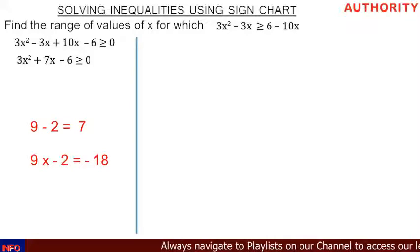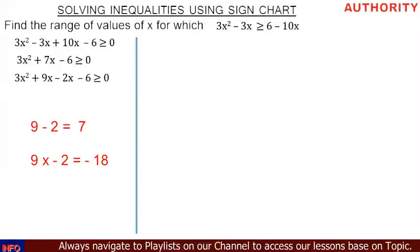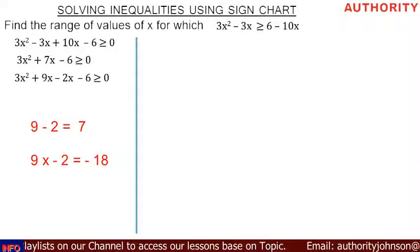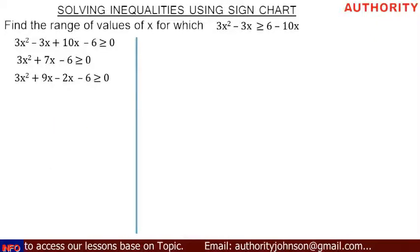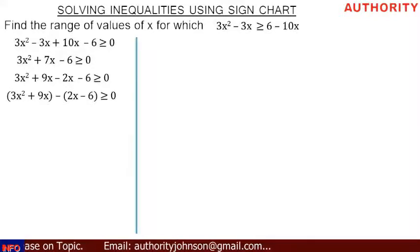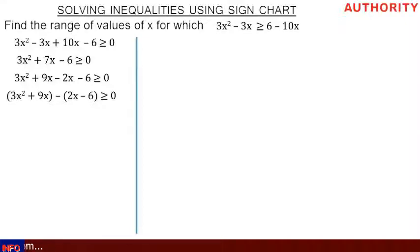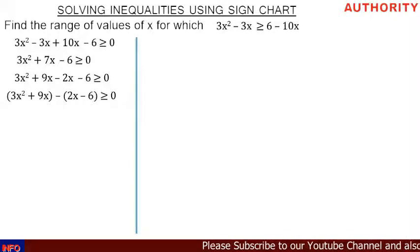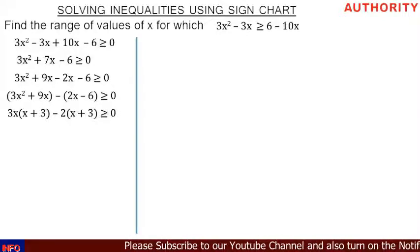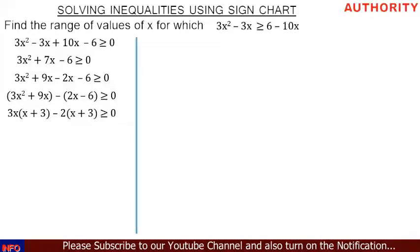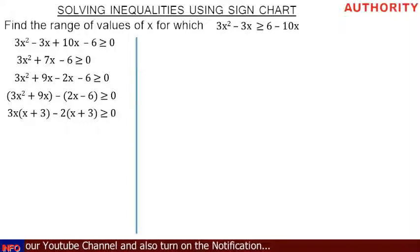We now have 3x squared plus 9x minus 2x minus 6, greater than or equal to 0. Let's group them two by two: (3x squared plus 9x) and (minus 2x minus 6), greater than or equal to 0. In the first bracket, 3x is common — factoring out 3x from 3x squared gives x, and from 9x gives 3, so the first bracket becomes 3x(x plus 3).